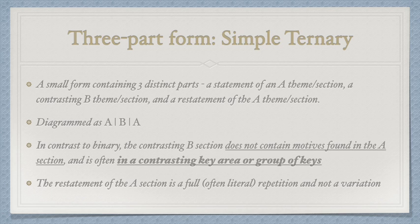Commonly, the third section, or the return of the A section, will feature more ornamentation than the first time we heard it. In these cases, the last section we will sometimes label as A' to indicate that it's slightly different from the first section, but still A material. This is the basic form that we're going to call simple ternary.